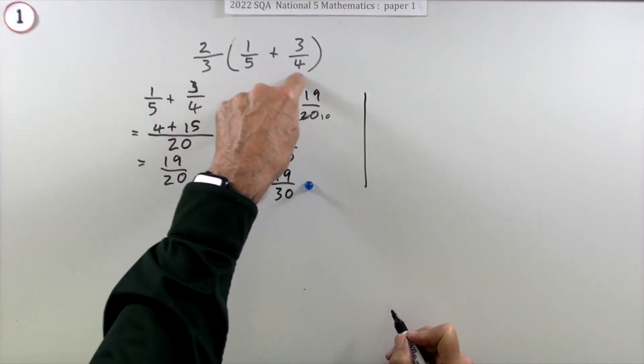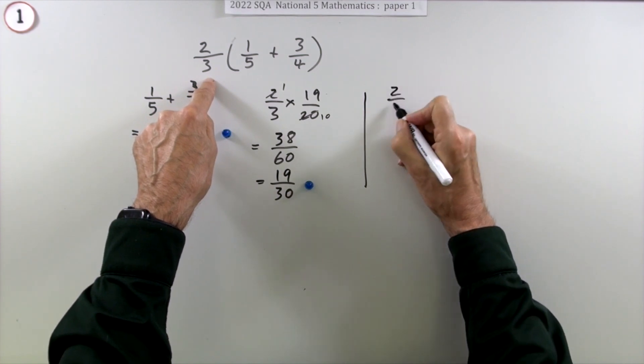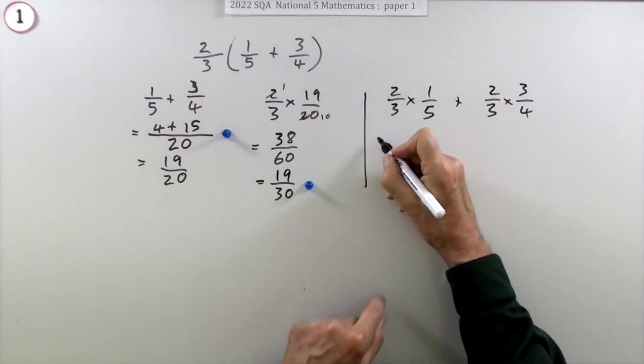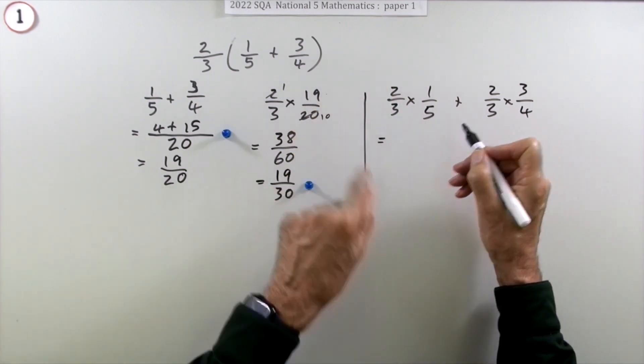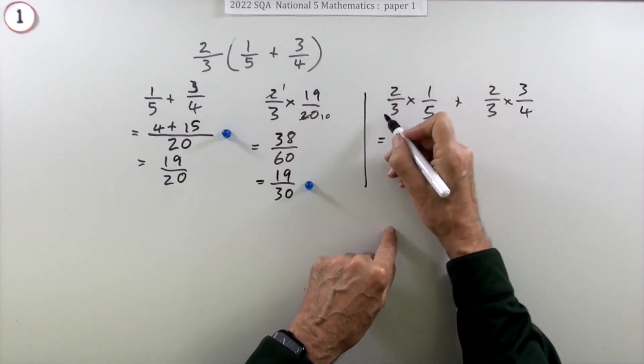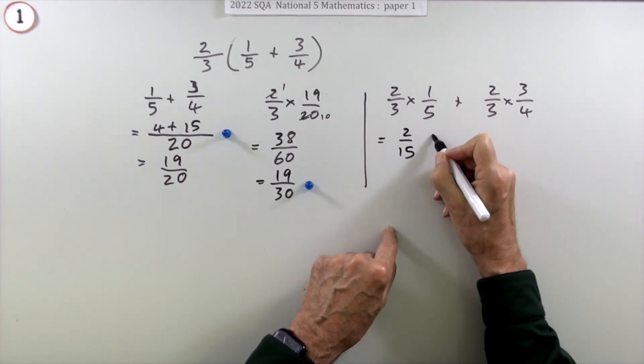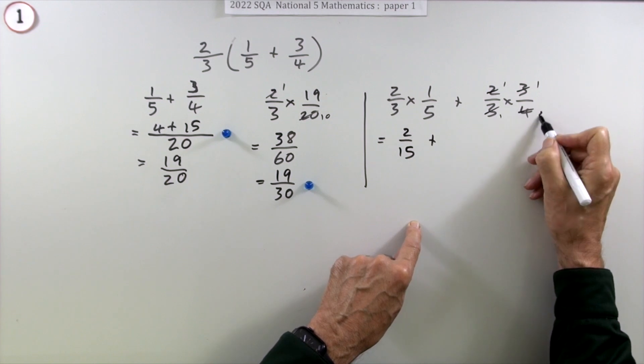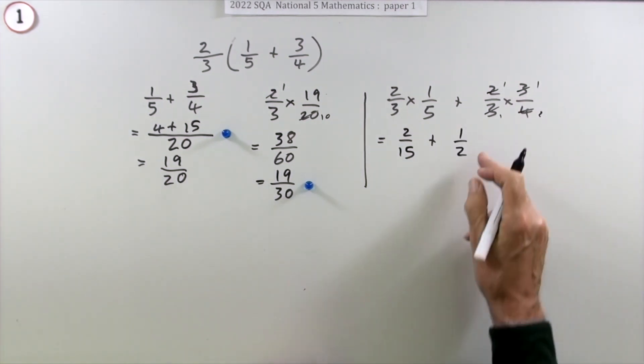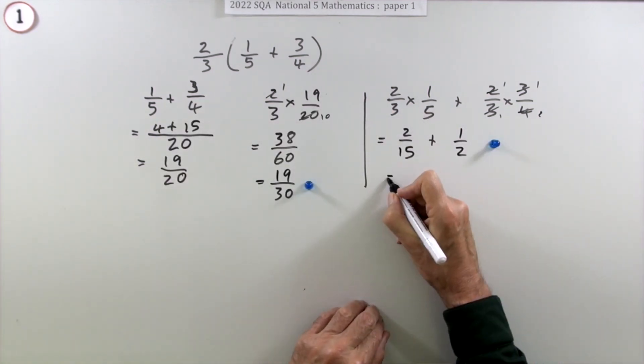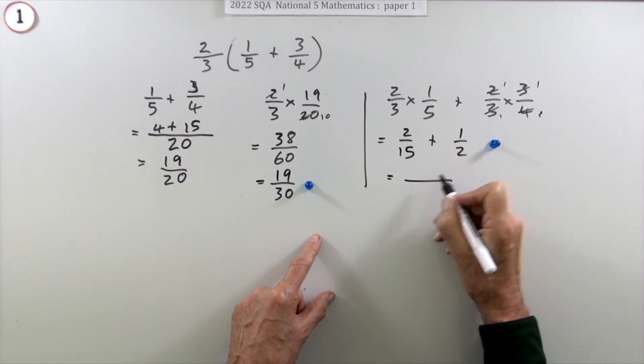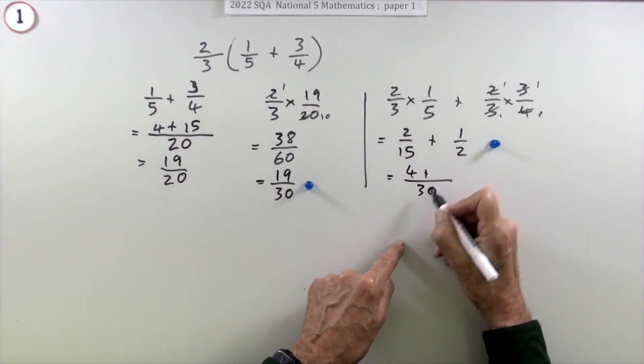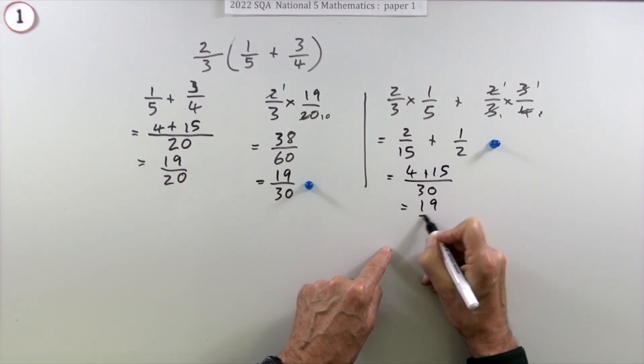The other way would be split it up: do the multiplication, do two-thirds of one-fifth plus two-thirds of three-quarters. This time I'm going to do the simplification first. There's no simplification here, so I'm left with two over 15. Here it just about all goes: three into three goes one, two into two goes one, so it just becomes one over two, which is a half. Now this time that would be the first mark. And then adding them into the same denominator: well, 15 and two both divide into 30. That gives you 19 out of 30.